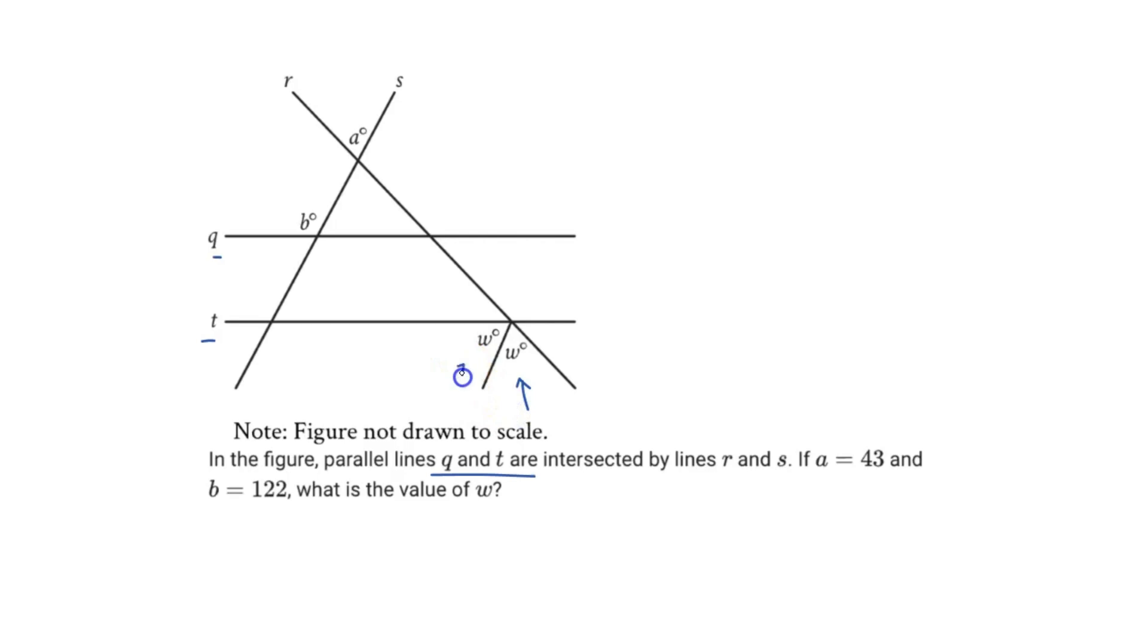Because w is down here, we have to find the value of that. So first, let's label a as 43 degrees, and then we have b as 122 degrees. First thing I see is vertical angle theorem. So the angle opposite of a here is going to be 43 degrees as well.